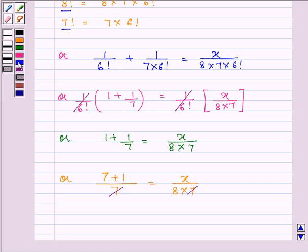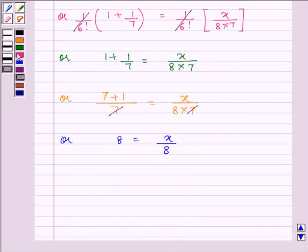We are left with 8 equals x divided by 8, which gives us 8 multiplied by 8. So our answer is 64.